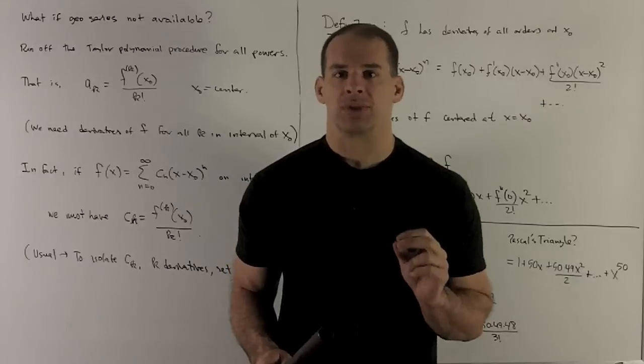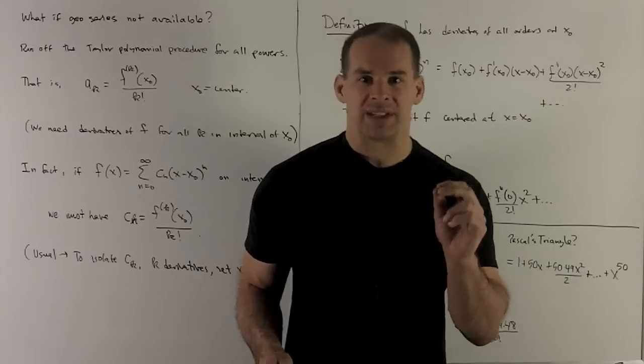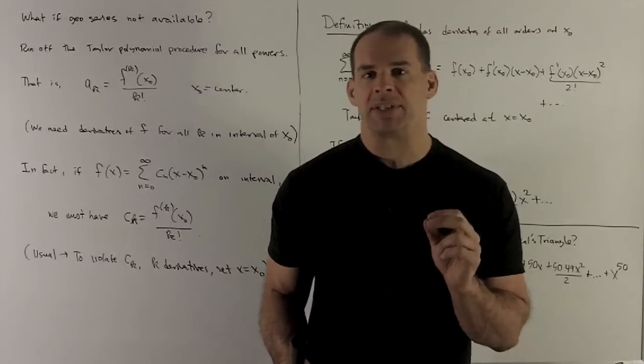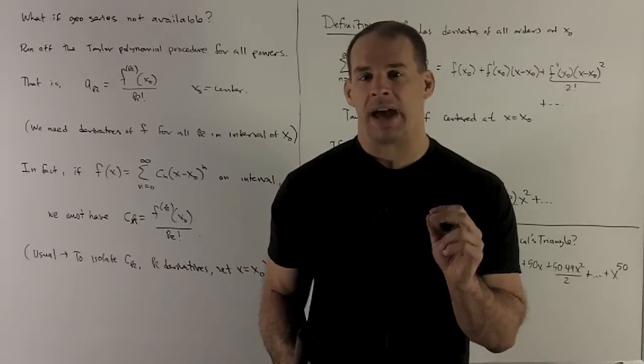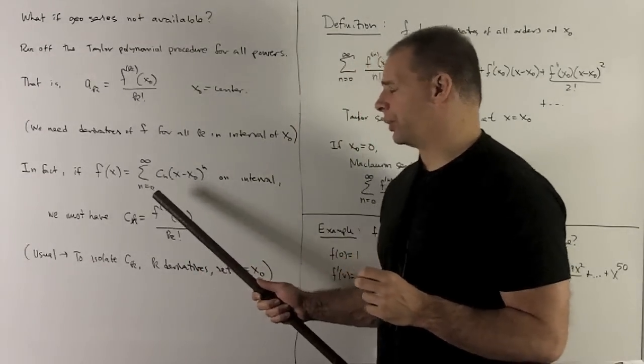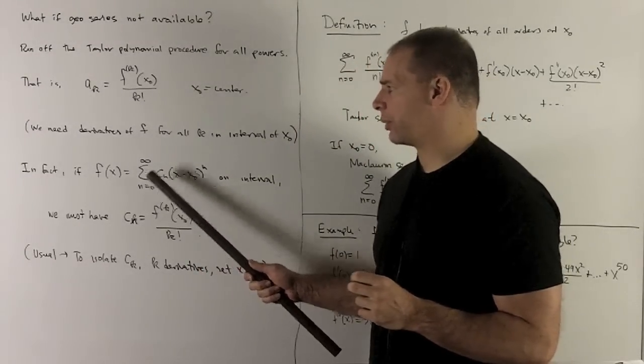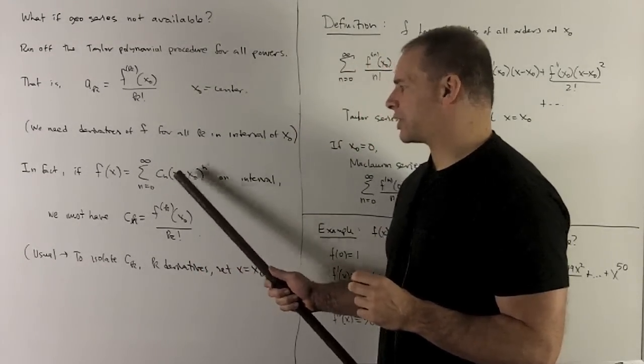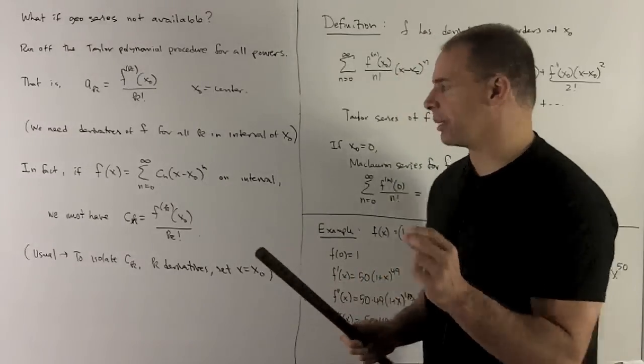So that's our first step. Next step is going to be, what happens if I have a function defined by a power series? So for instance, my f of x equal to, from n zero to infinity, cn times x minus x zero to the n on some interval.